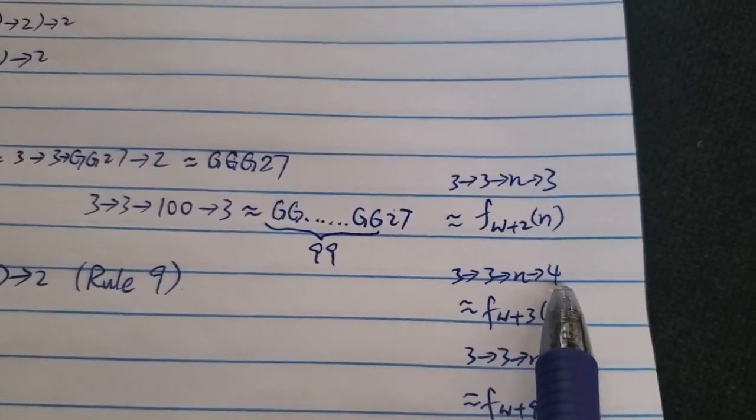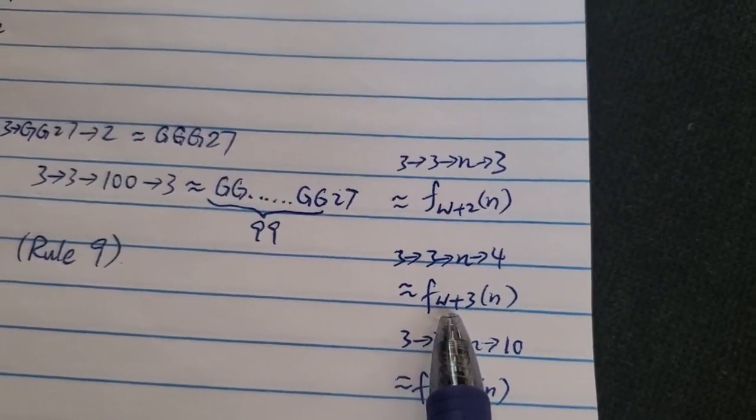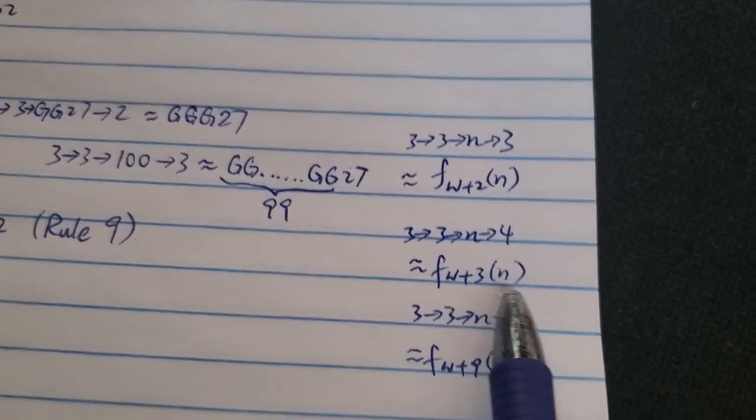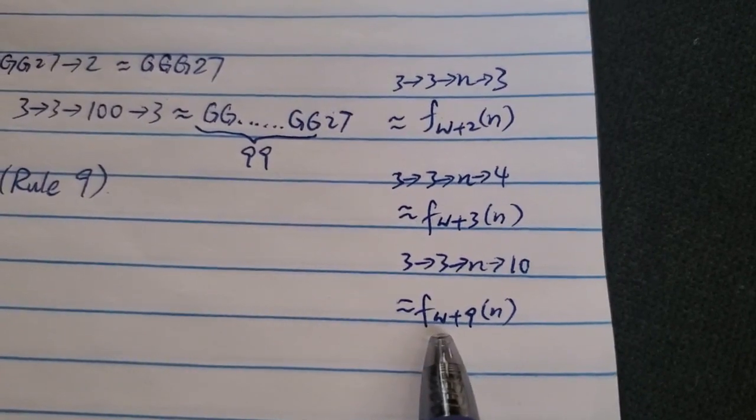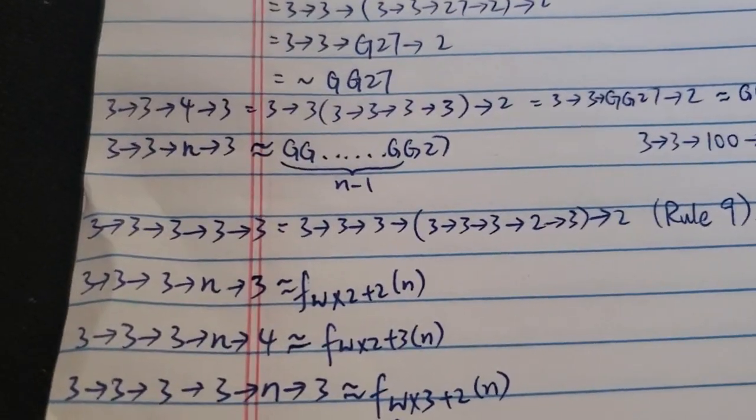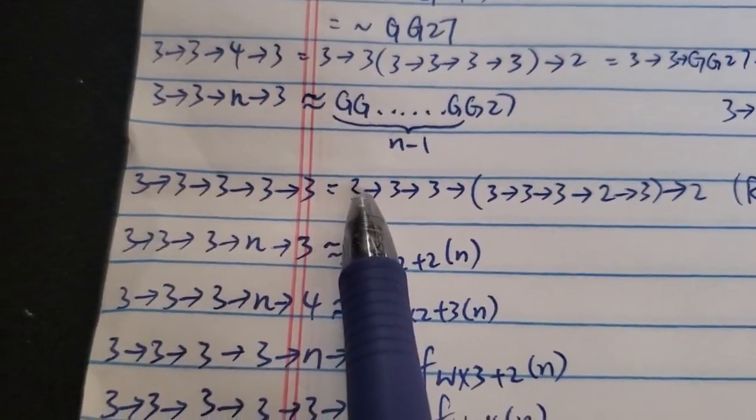And then 3→3→N→4, if you add 1 to the last number for 4 entries, you just get f_ω+3(N). So you can see the pattern here, 3→3→N→10 is somewhere around f_ω+9(N).